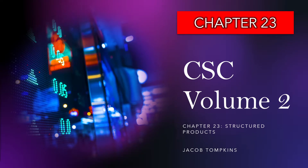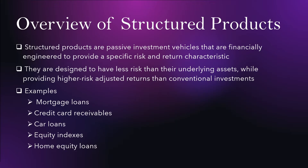Welcome to chapter 23 of the Canadian Securities Course, Volume 2. In this chapter we are going to be looking at structured products. Basically they are passive investment vehicles that are financially engineered to provide a specific risk and return characteristic. They're also designed to have less risk than their underlying assets while providing higher risk-adjusted returns than conventional investments.